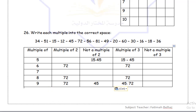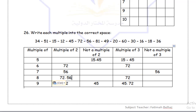Moving on to 56. Is 56 a multiple of 5? No. A multiple of 6? No. A multiple of 7? Yes, and it's an even number so I'll copy it there. Is it a multiple of 3? No, 56 is not a multiple of 3, so I'll write it as not a multiple of 3. Is it a multiple of 8? Yes, and not a multiple of 3.